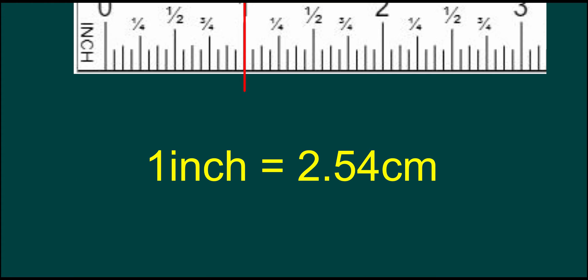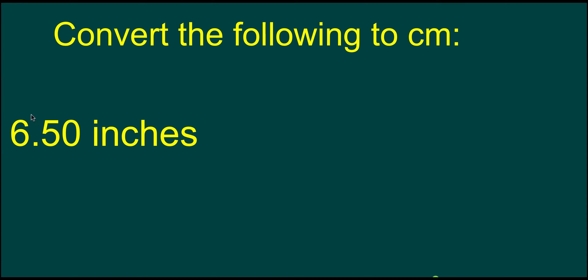Let's take a look at an example. So I would like to convert 6.50 inches into centimeters. So we will use our ratio of 2.54 centimeters per inch.